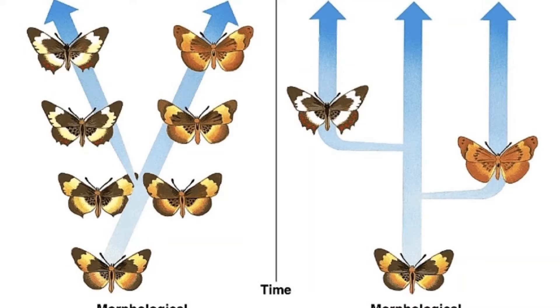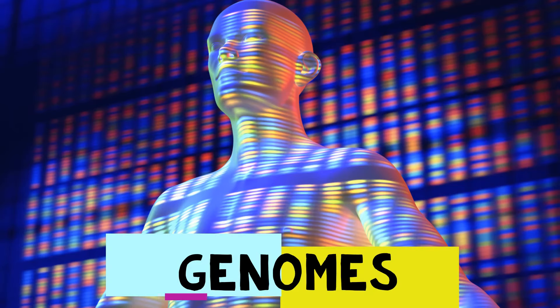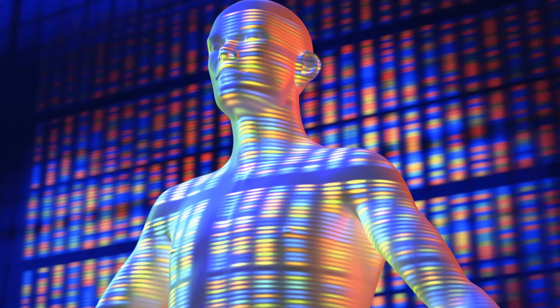Stabilizing selection brings individuals closer to the mean of the population — this could show beak length, for example. Directional selection brings individuals away from the mean in a new direction. The genome is the entirety of genetic material carried by an individual or species. The database of genomes of different species is growing and includes humans. Simple genomes such as those of viruses can enable a relatively straightforward effort of assigning proteins to each gene in the genome, creating a database called the proteome.